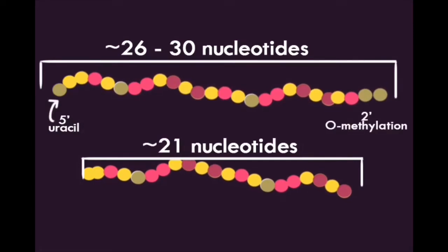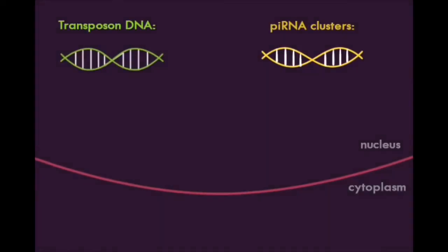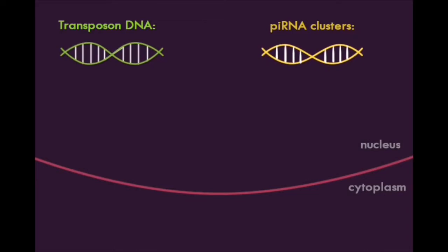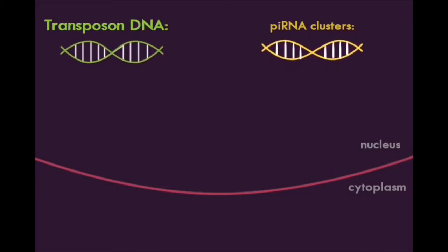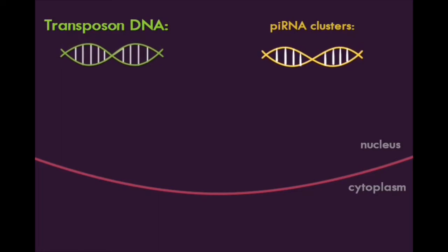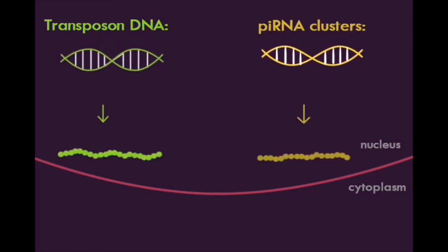PI-RNAs will usually have a 5' uracil end and a 2' O-methylated end. In the primary biogenesis pathway, PI-RNA precursors are transcribed from transposon sequences or genomic regions known as PI-RNA clusters in a uni- or bidirectional manner.